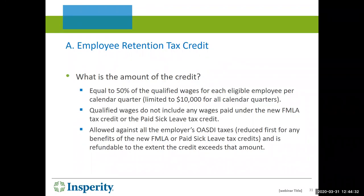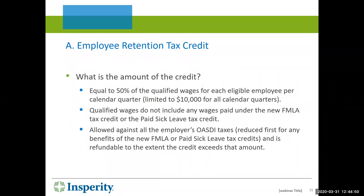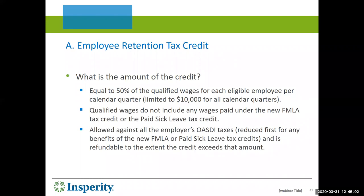Technically it's 50% of the qualified wages, but each individual employee has a maximum of $10,000 in wages that can qualify. You can't get it if you're also benefiting from the new FMLA tax credit or the paid sick leave tax credit. It is fully refundable — initially against those payroll OASDI taxes — but even if it's more than that, the Treasury and IRS will actually send you a check.